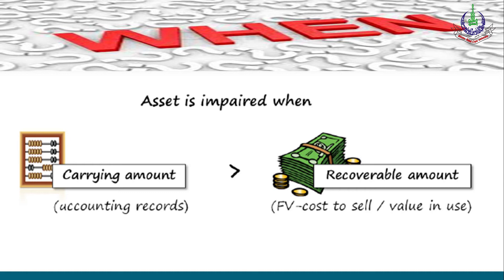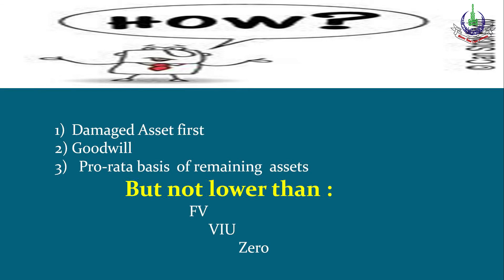We need to look at the carrying value and the recoverable amount of the asset or group of assets (CGU). For allocation of impairment loss: once we have calculated the impairment, how do we allocate it? IAS 36 says: first allocate to goodwill, then allocate on a pro-rata basis to remaining assets based on carrying value ratio. So first goodwill, then pro-rata allocation to remaining assets based on paragraph 104.